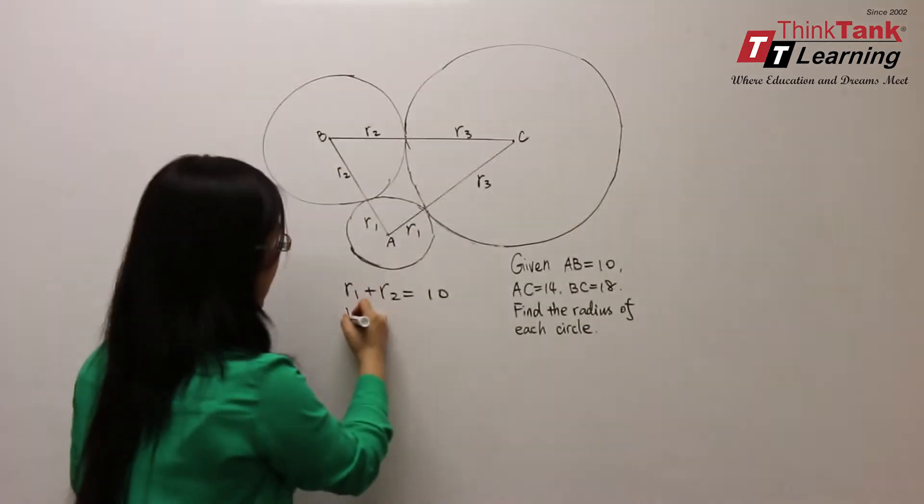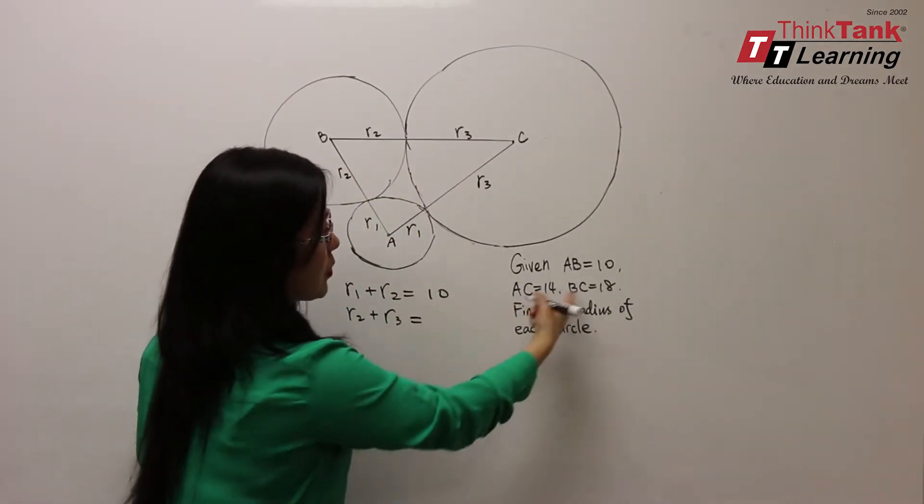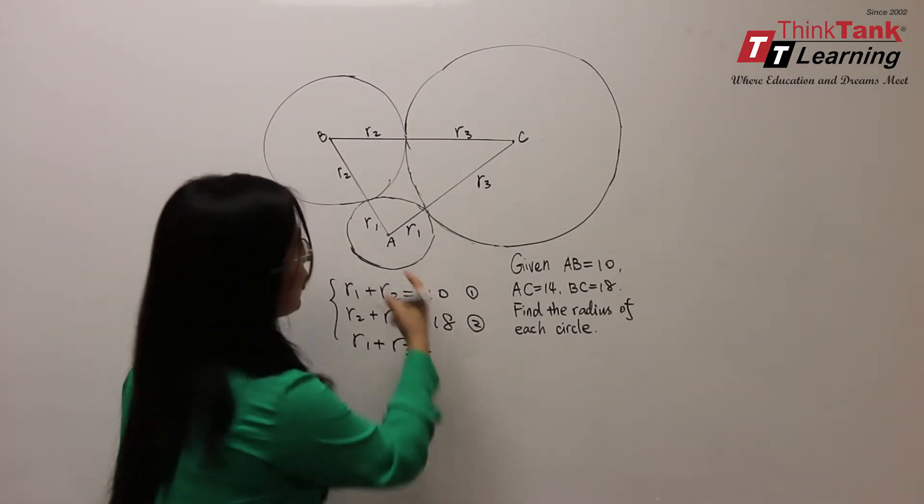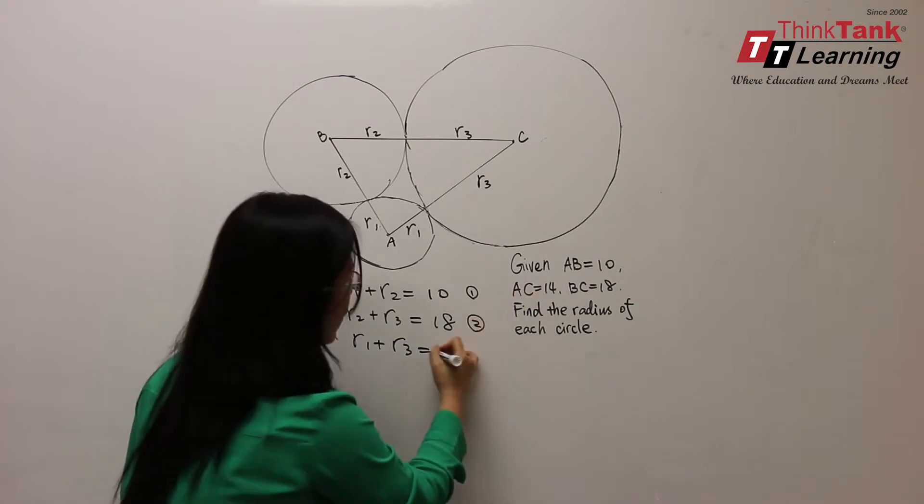R2 plus R3 equals BC, which is 18. And R1 plus R3, which equals AC, so it's 14.